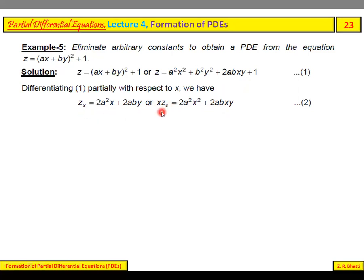Alternatively, we can write this as xz_x = 2a²x² + 2abxy. A constant term has been eliminated.